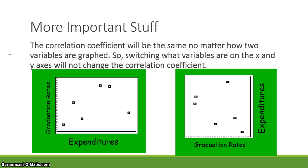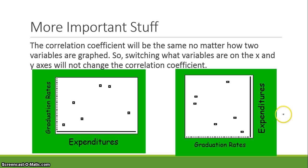Also, the correlation coefficient will be the same no matter how the two variables are graphed. Switching what's on the x and y axes will not change r. For example, this graph shows graduation rates on the y-axis and expenditures on the x-axis with some positive correlation coefficient. If you flip it — graduation rates on the x and expenditures on the y — the correlation coefficient stays the same. For AP Statistics, they might ask: 'Suzy switched which variables were on the x and y axis — how does this change the correlation coefficient?' The answer: it doesn't.